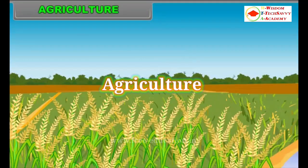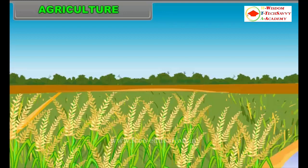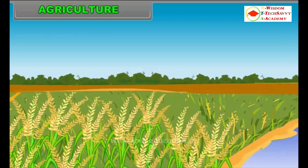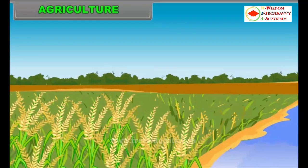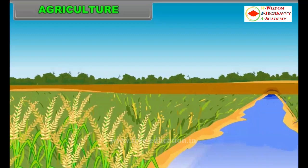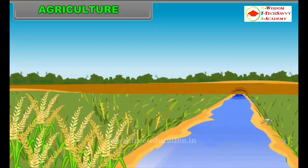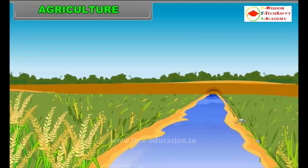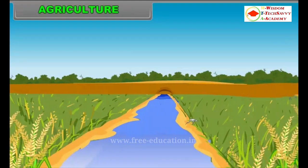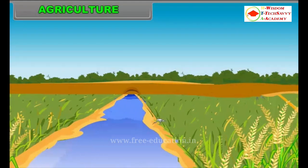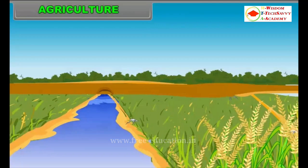Agriculture is the art and science of raising plant life from the soil. Agriculture is one of the oldest activities of humankind, and today it includes not only cultivation of crops but also domestication of animals. Agriculture is the most basic resource as it provides food, clothing and shelter to mankind.